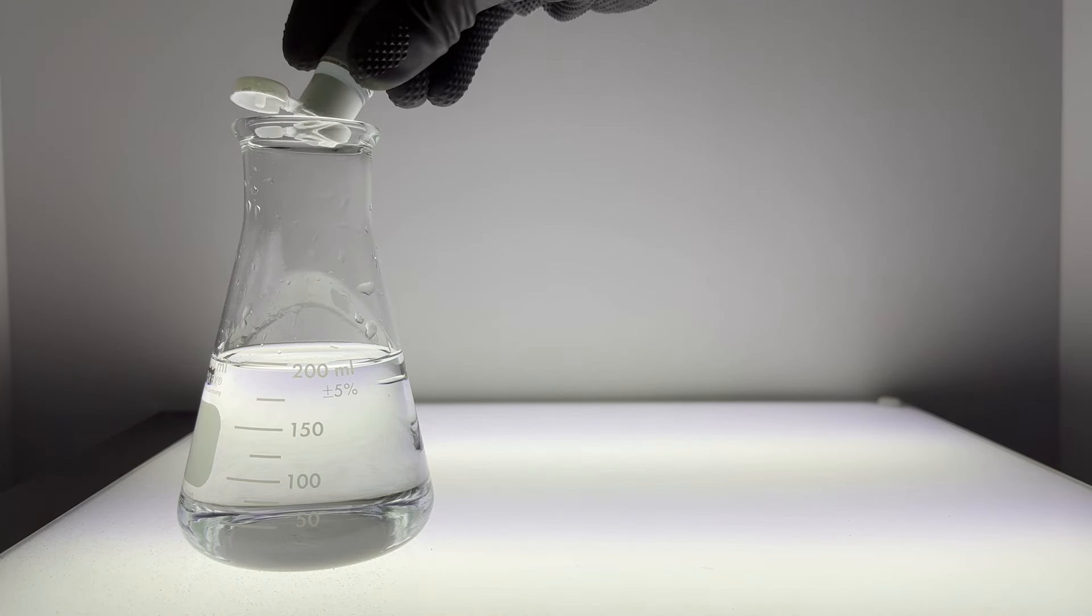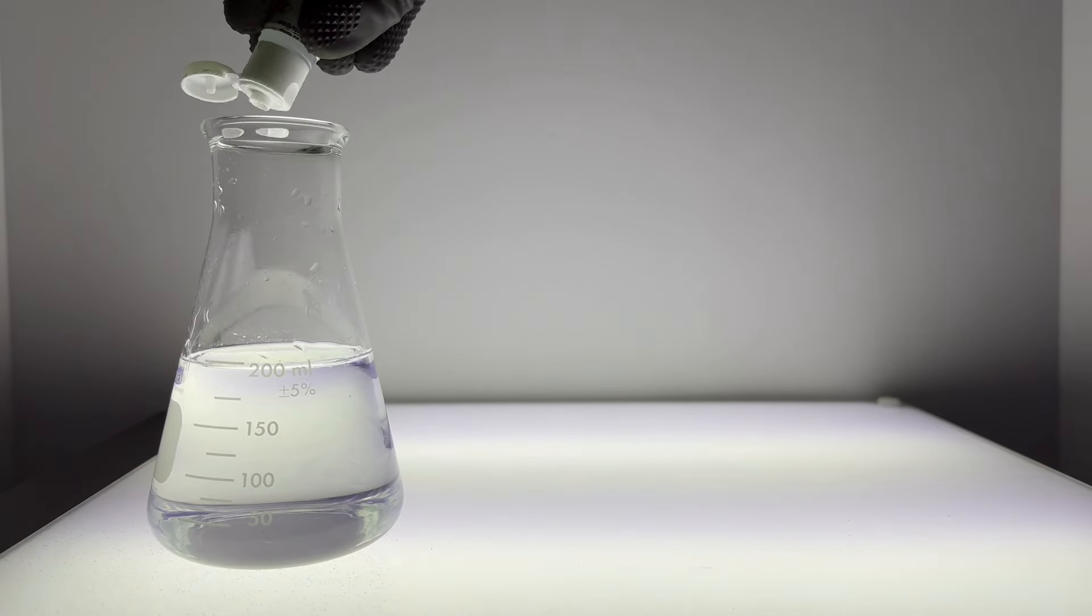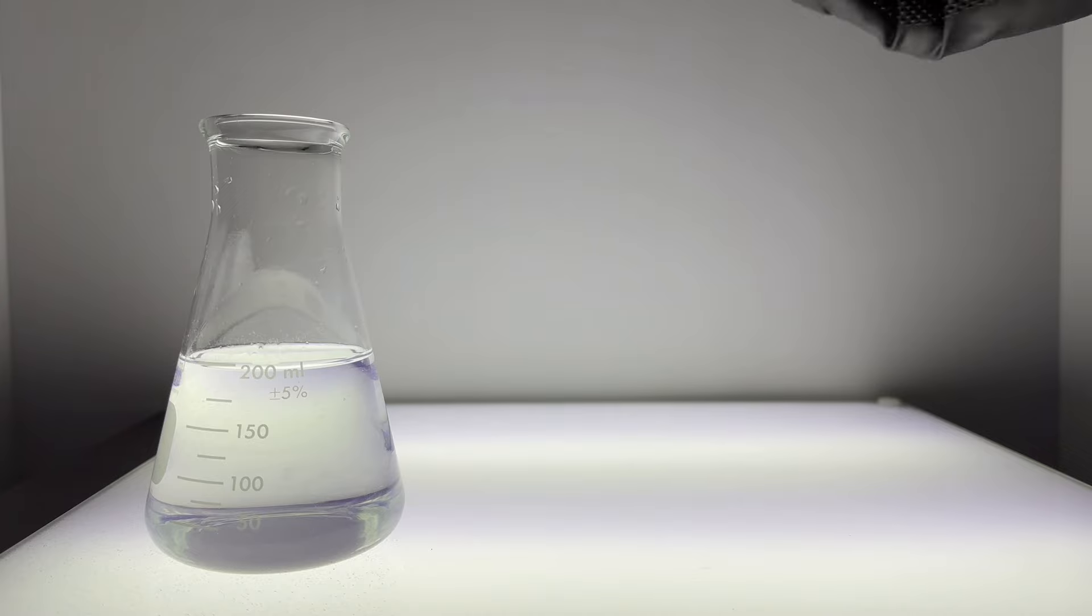For example, watch what happens when we add both phenolphthalein and thymolphthalein to this flask, and then add a little bit of base. Together, these two indicators generate a violet color.